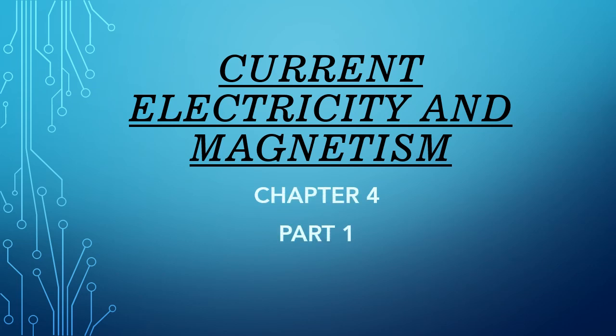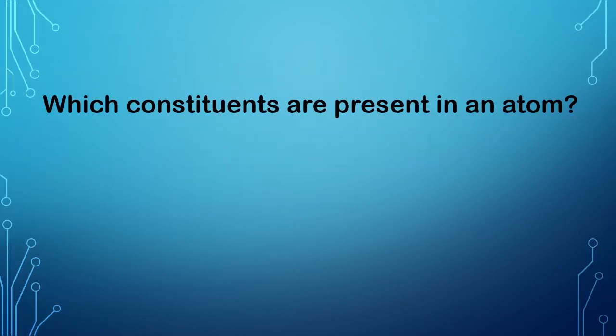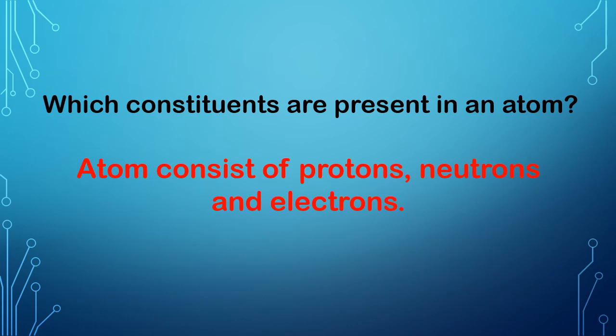Before we begin the lesson, let's have a quick revision. Which constituents are present in an atom? Think students. An atom consists of protons, neutrons and electrons.